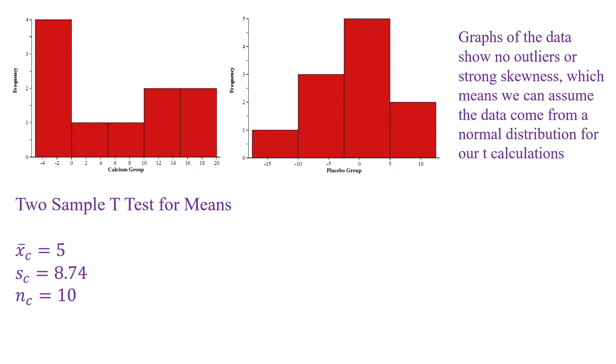And because the data is already in my calculator, I can go ahead and get my summary statistics here. So for the calcium group, I run my one var stats on my calcium group, which was in list one. And I get my mean standard deviation and my sample size for my calcium group. I'm going to do the same thing for my placebo group, mean standard deviation and my sample size for my placebo group.